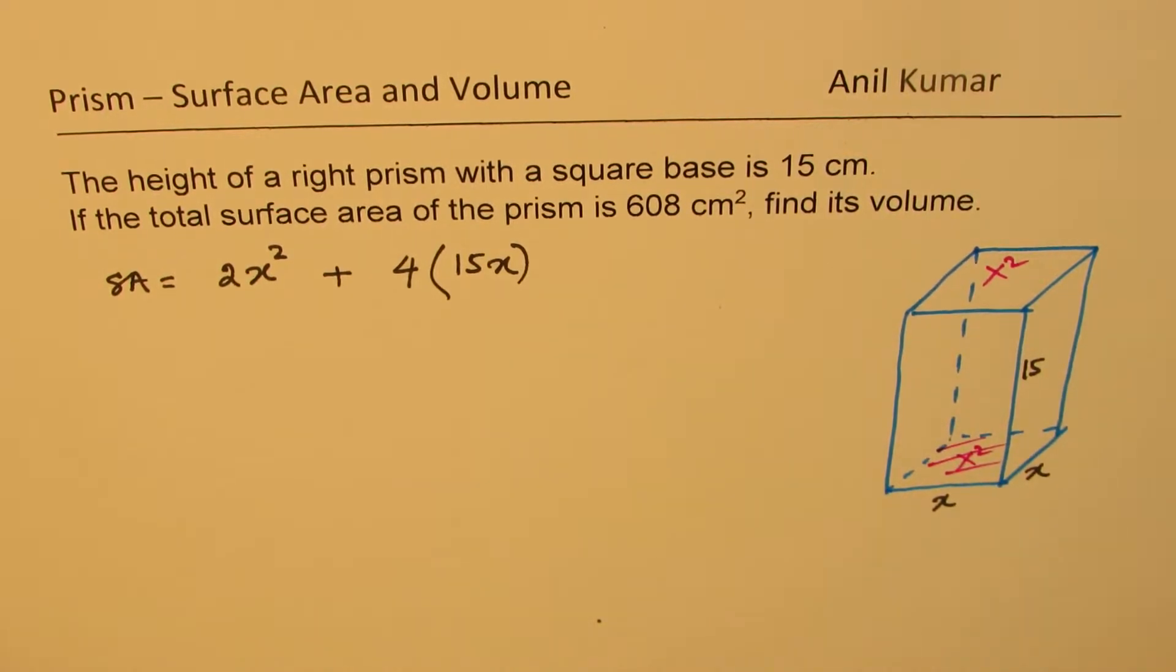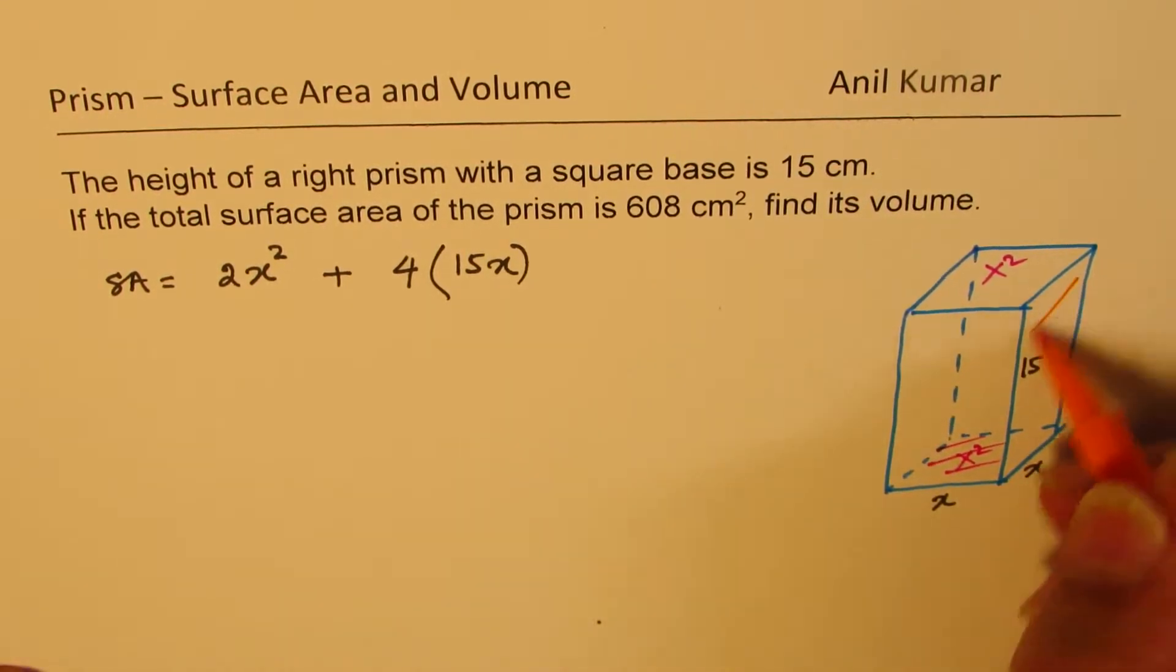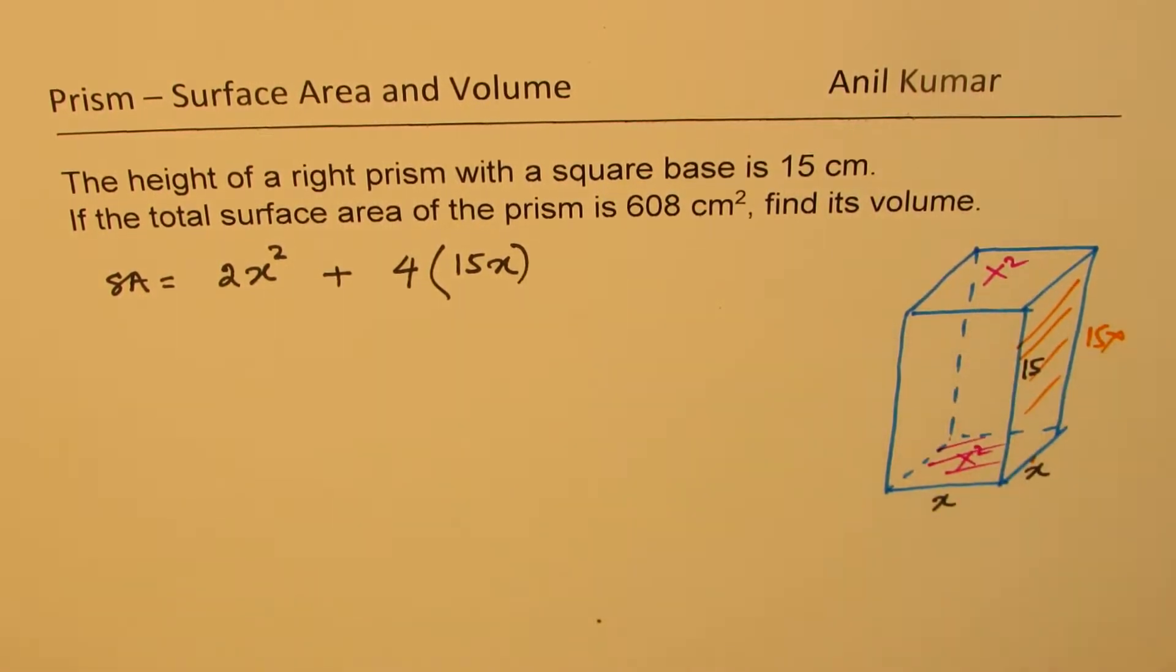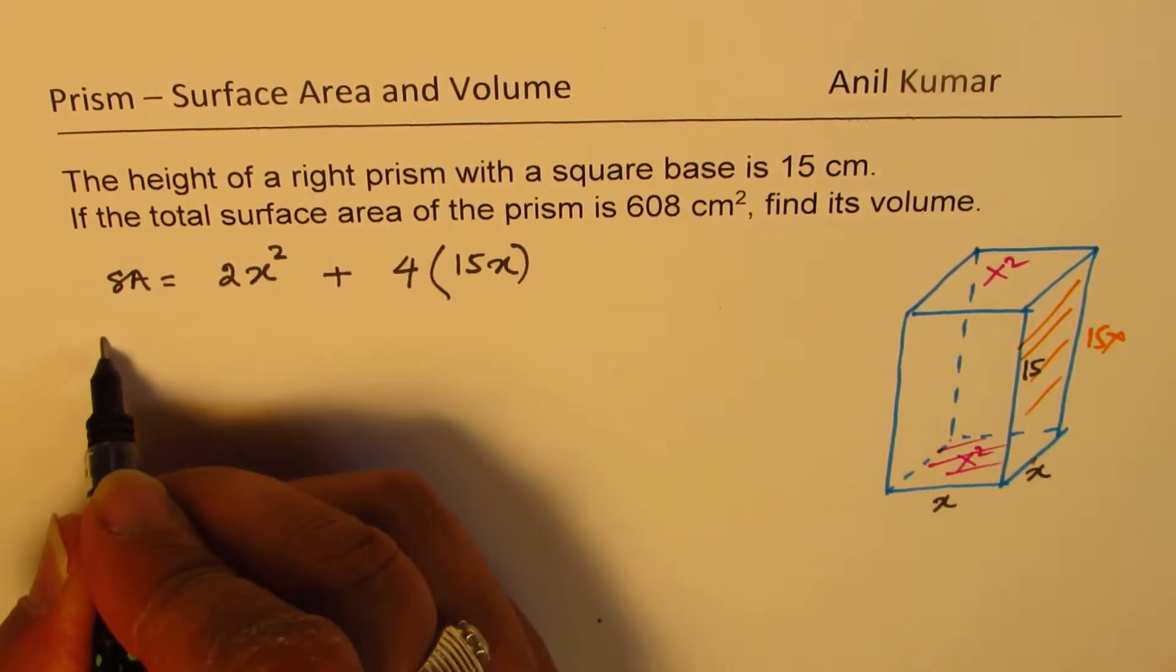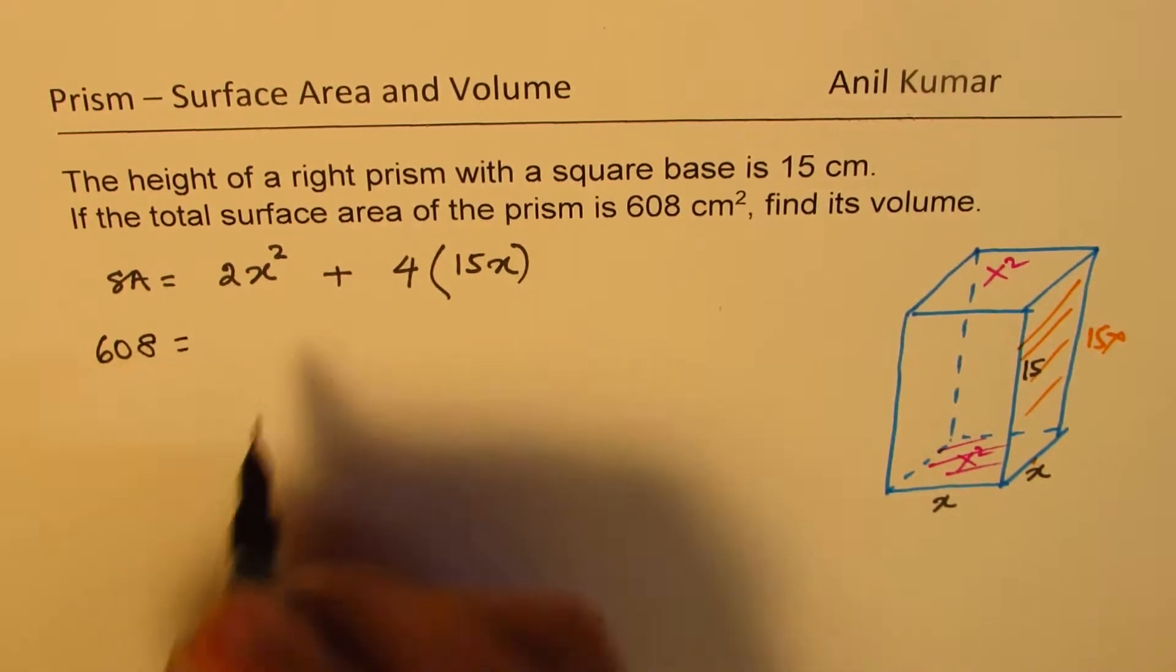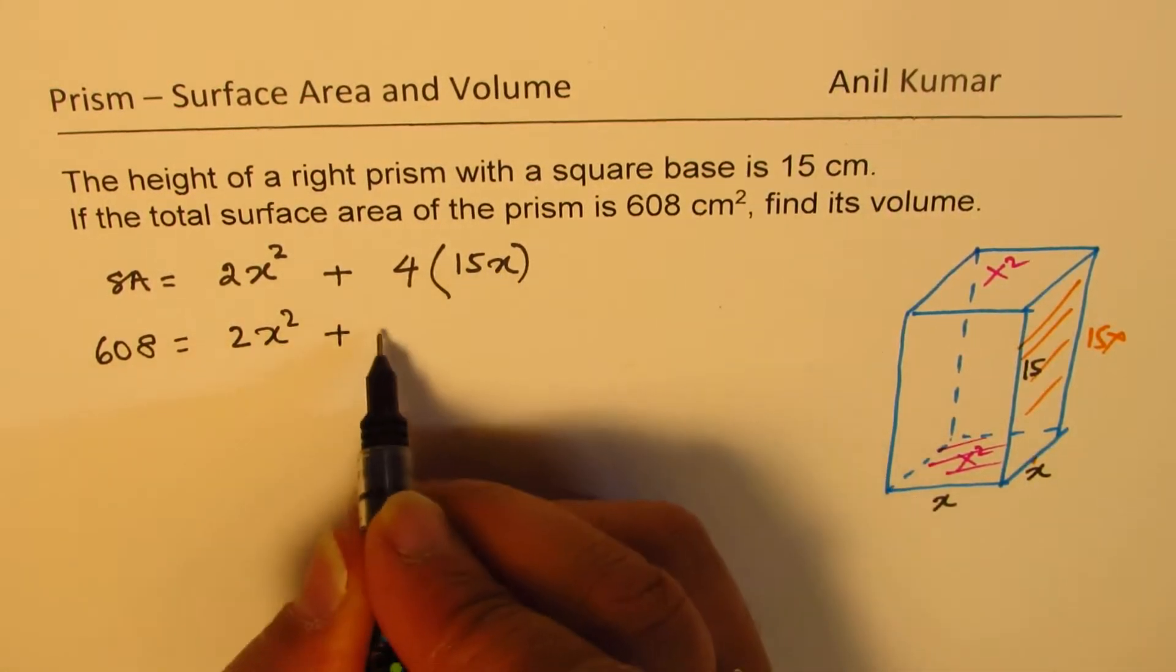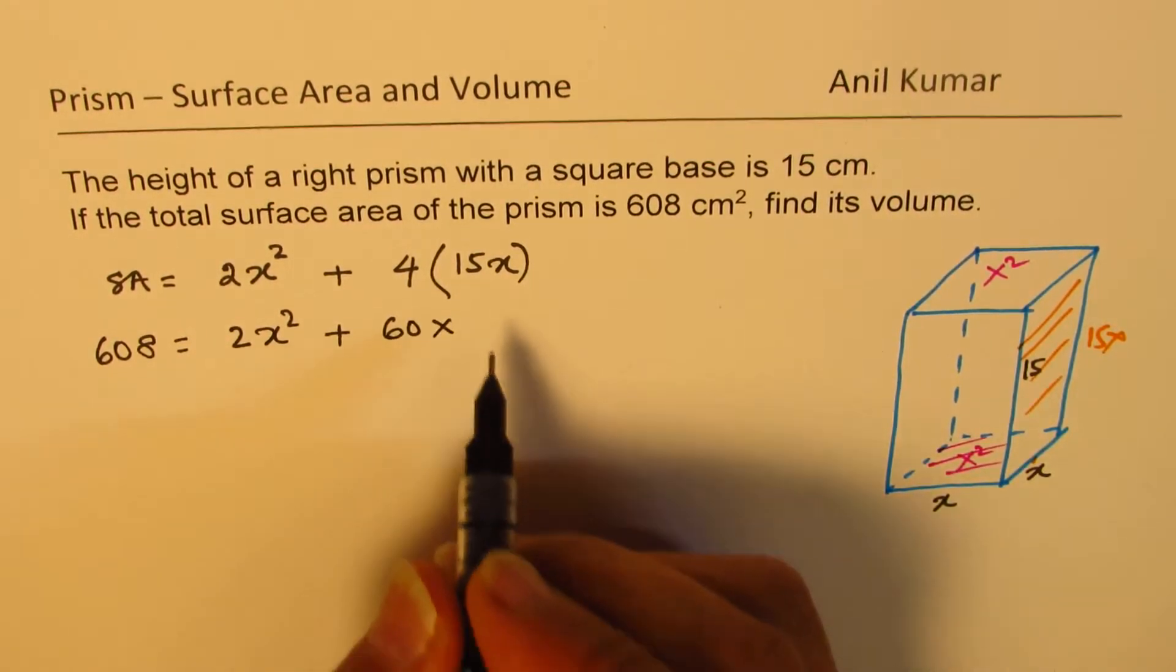And each side here, these sides will be 15x area. So there are four such sides. So that becomes the formula. Now, we are given the surface area 608. So we can write 608 equals 2x squared plus 60x.